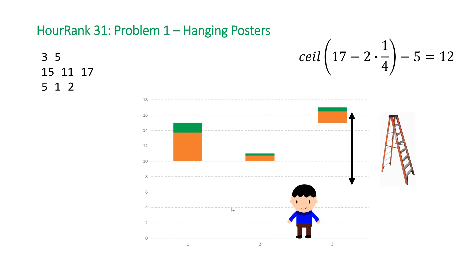Note that if the poster is low enough, we don't want a negative ladder height, so we floor the result at zero. It's straightforward: you just need a single for loop to calculate this, store the maximum, and then subtract h.